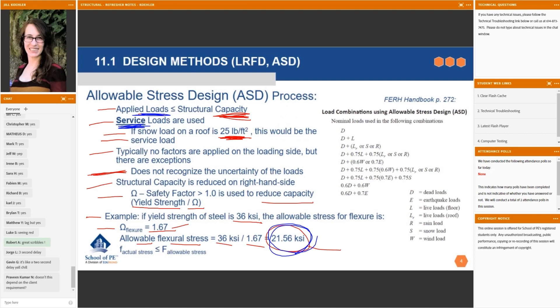So if our stress in a beam due to service loads ends up being less than 21.56, we're good. If it ends up being more than 21.56, we're not good. That means we need to use a bigger member, use a stronger steel, or rearrange the layout of our beams to get that stress under the allowable stress.